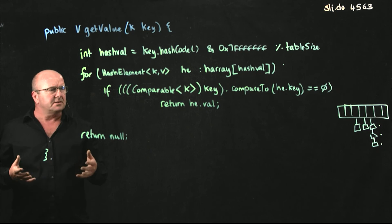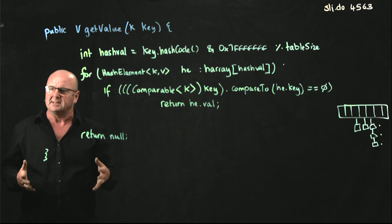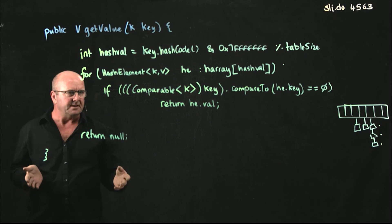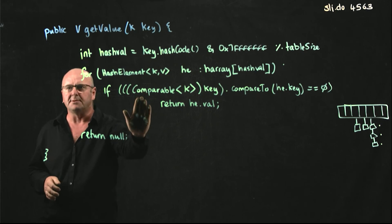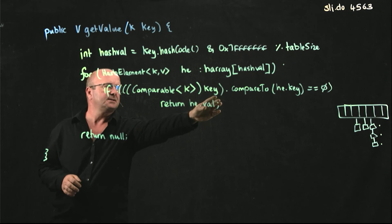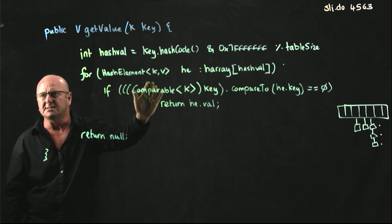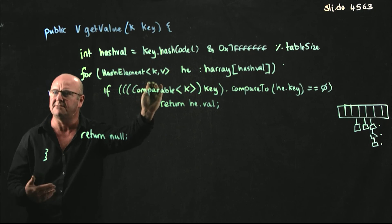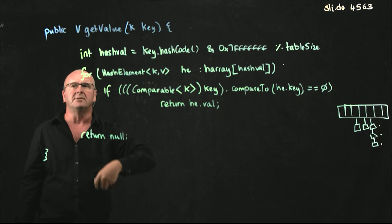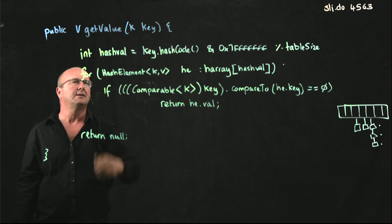So this code has combined a whole bunch of different things that you guys have learned over the last few weeks, right? We've got comparable, we're comparing keys. We've used our iterator, but our iterator that we've used is the one that we wrote in our linked list. So the reason that we struggled to write the iterator in assignment one is so we can use it in assignment two in our linked list.